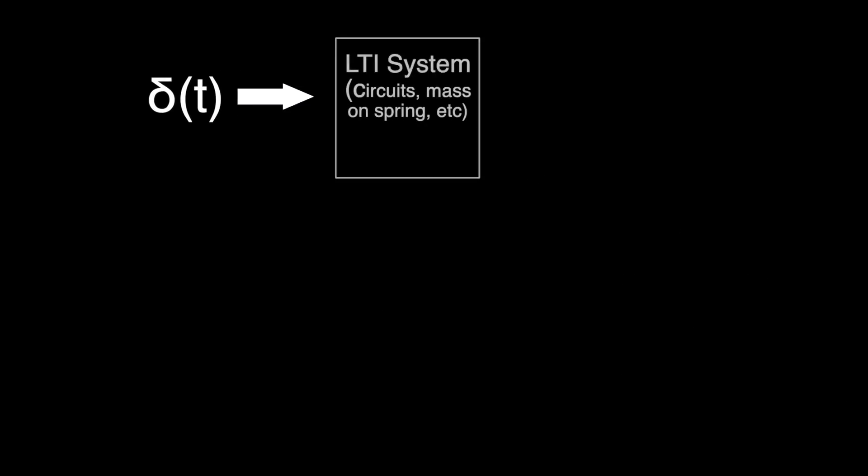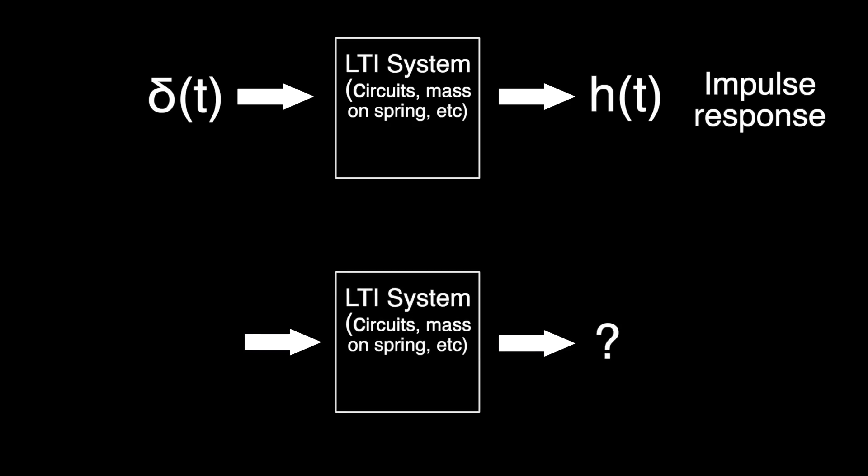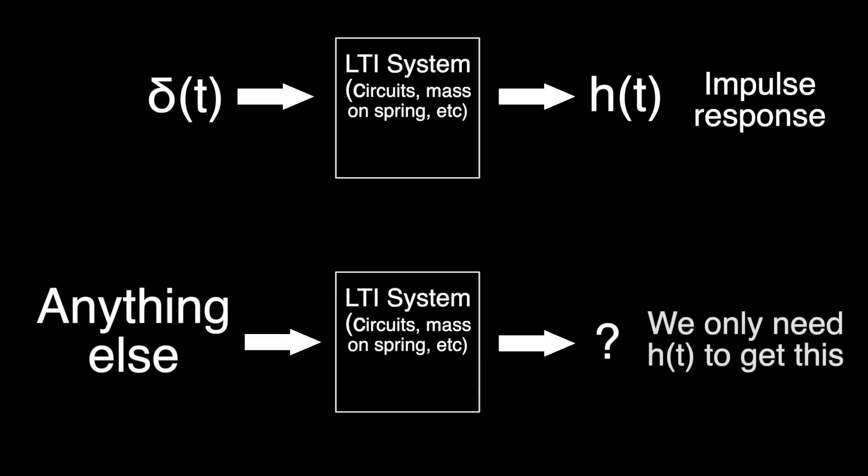The reason this function is important is because by knowing what the system does when the Dirac delta function is applied, and this output is known as the impulse response, by knowing that you can figure out what the system will do when any other function is applied. We only need to know h of t and the input to get this response.